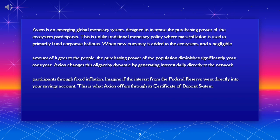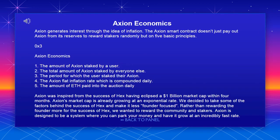Axion changes this oligarchy dynamic by generating interest daily directly to network participants through fixed inflation. Imagine if the interest from the Federal Reserve went directly into your savings account. This is what Axion offers through its certificate of deposit system — Axion economics.